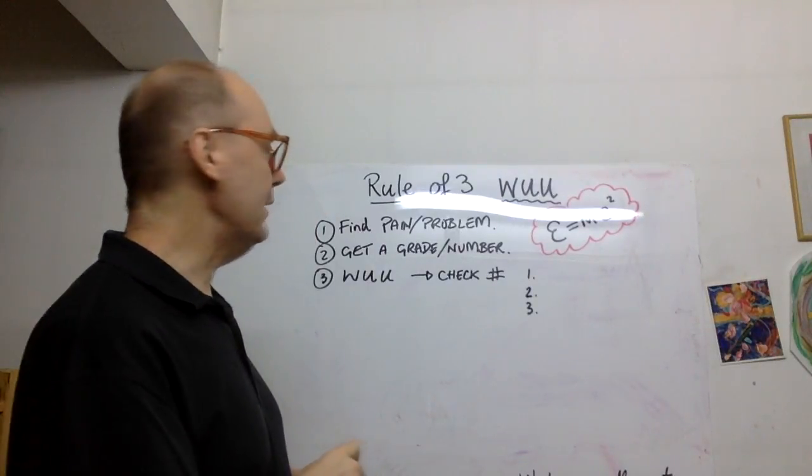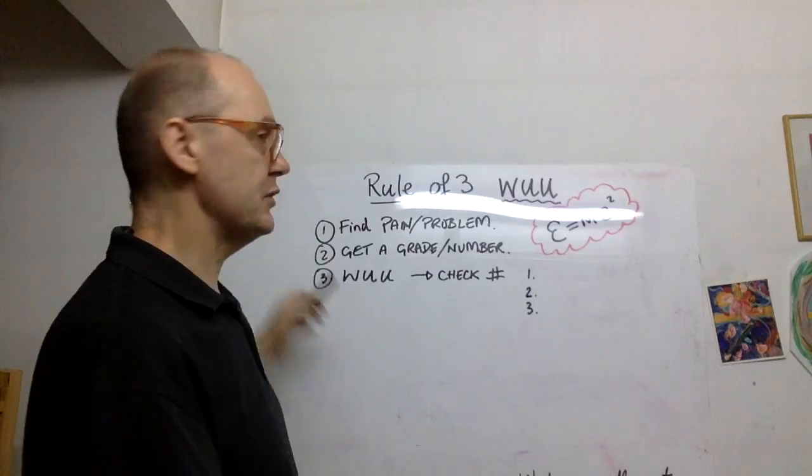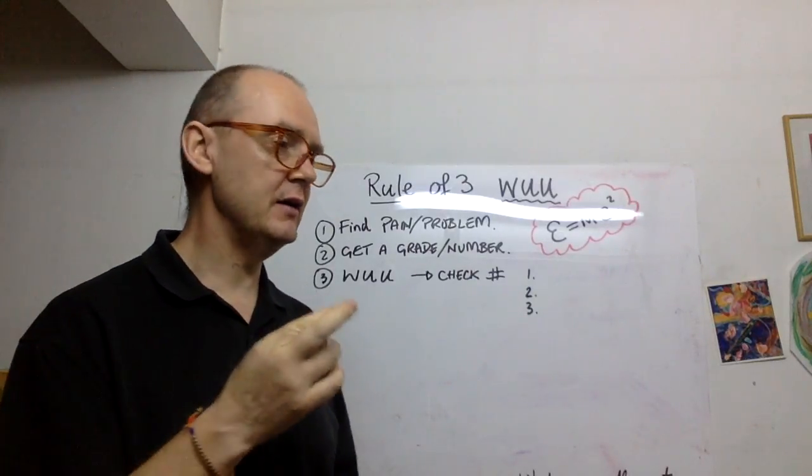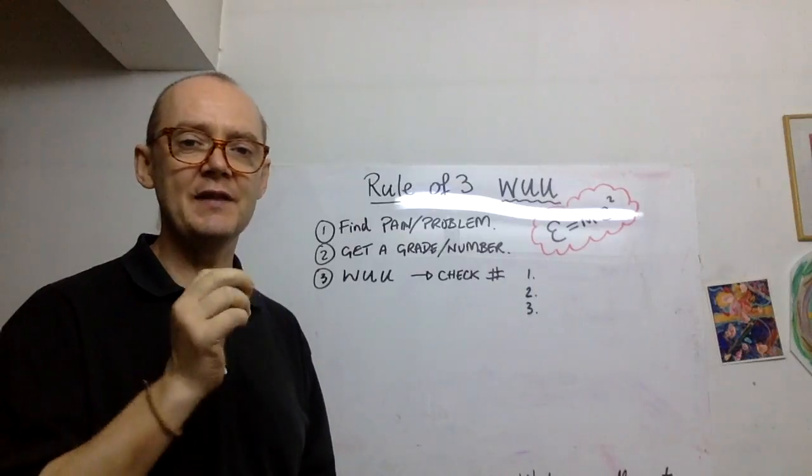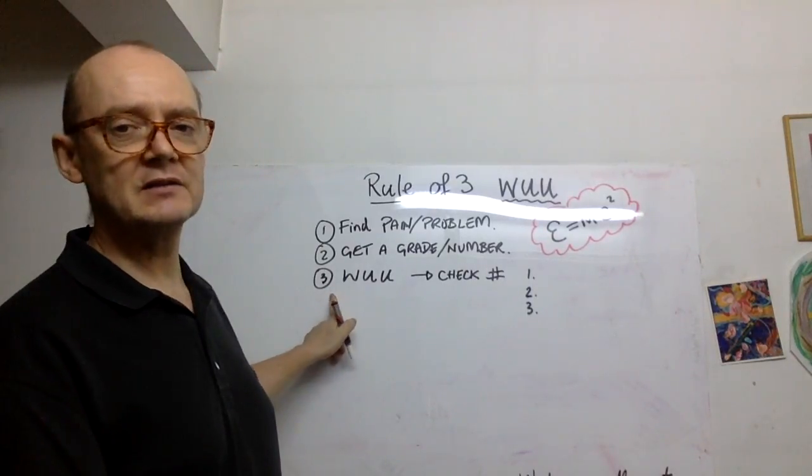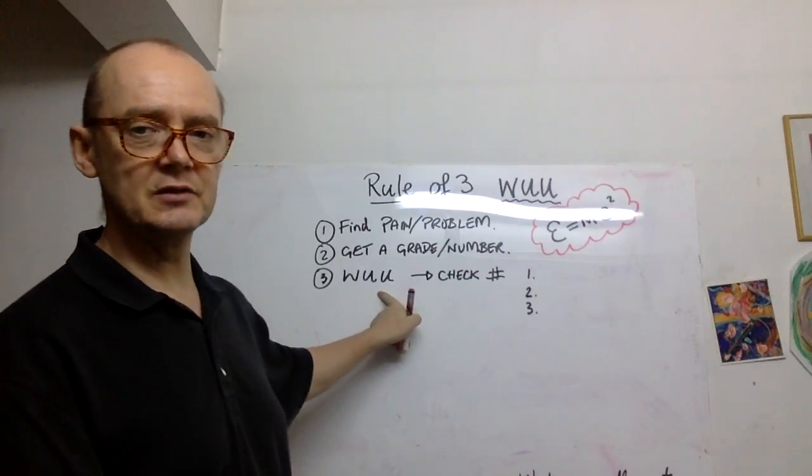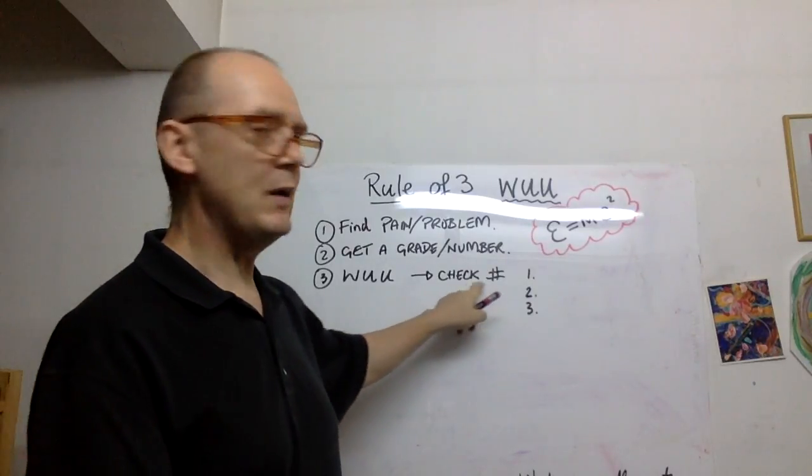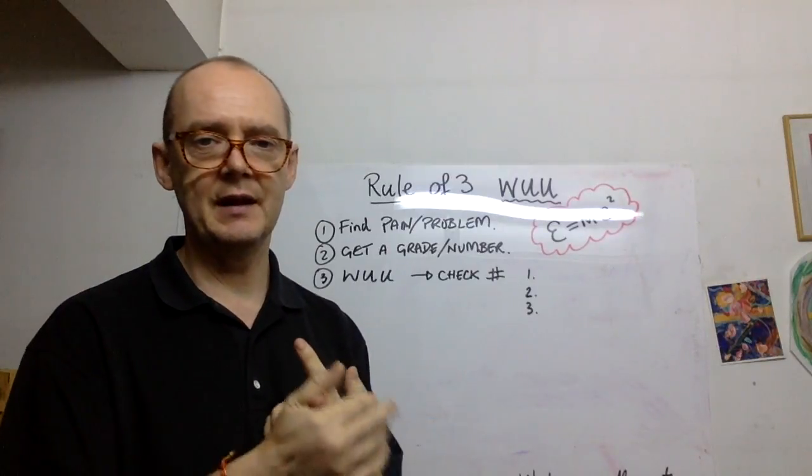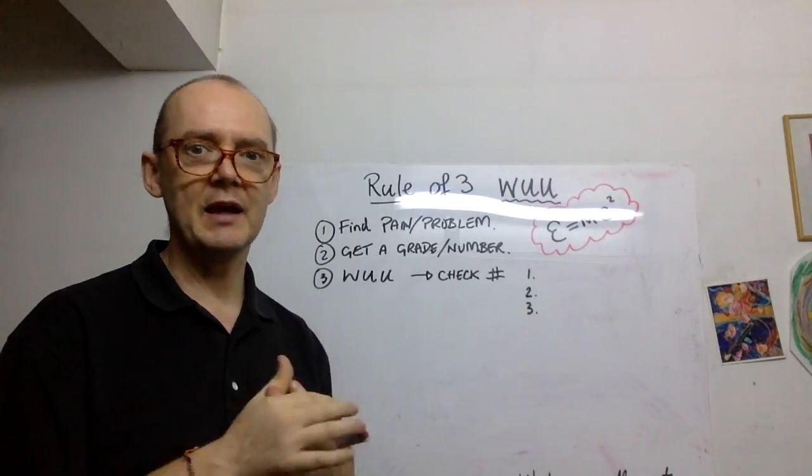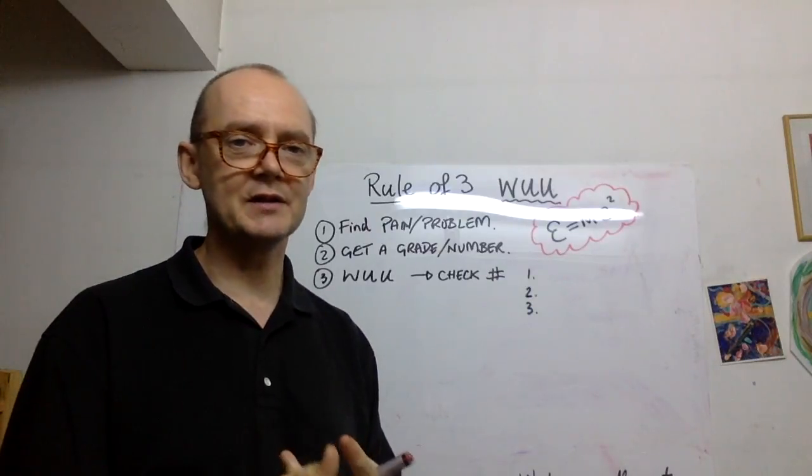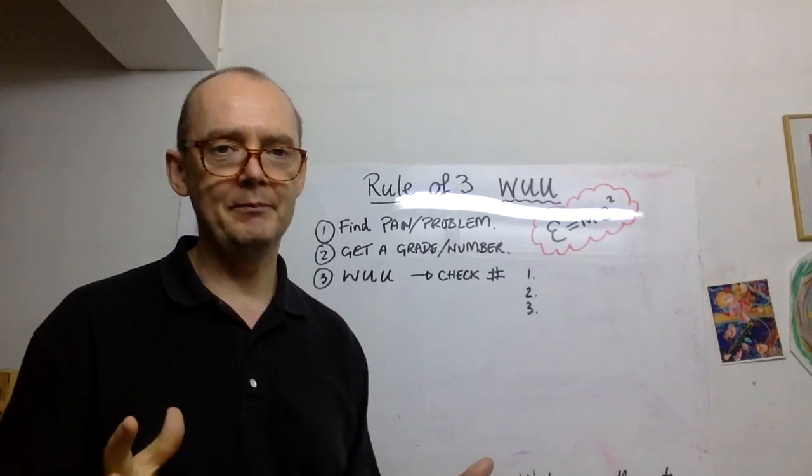When you've got a number, then what you're going to do is basically with working with pain, you're going to have the intent to send the energy back through to zero. But that's what we call that little process is called the WOU. Now after one time, so you do your three steps, the wave, three points, and then the breath, after one time you say what level is it now? If there's no change after one time, you don't give up.